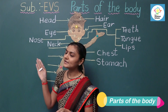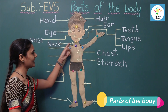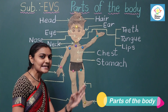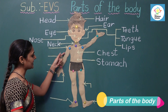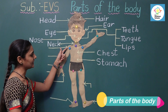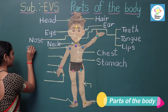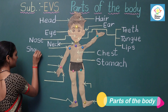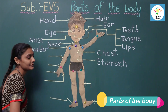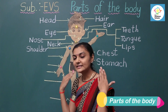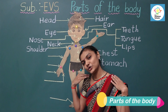The next one is shoulder — S-H-O-U-L-D-E-R. With the help of our shoulder, we can move our arm or hand. Next is elbow — E-L-B-O-W. With the help of elbow, we can fold our hand.